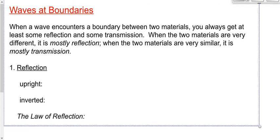There are two things that will happen when a wave encounters that boundary: reflection and transmission. You will always get some of both. Some of the wave will always reflect, and some will always transmit. How much transmits and how much reflects depends upon the materials. If the materials are very similar, you get mostly transmission. If very different, you get mostly reflection — but you always get some of both.